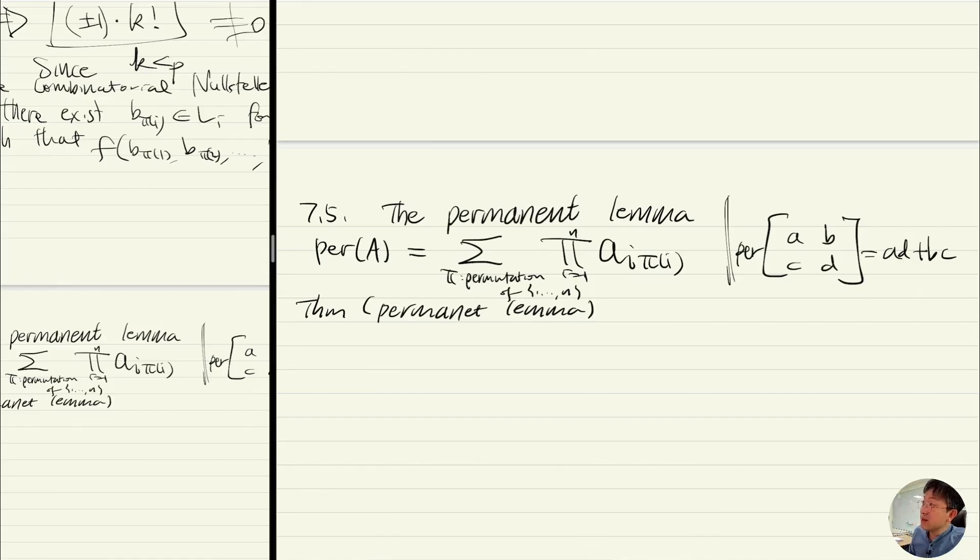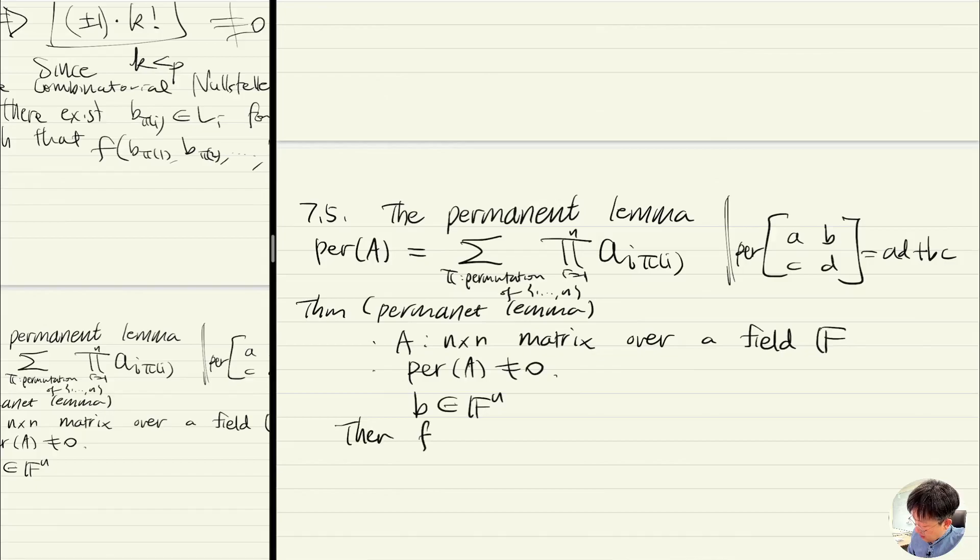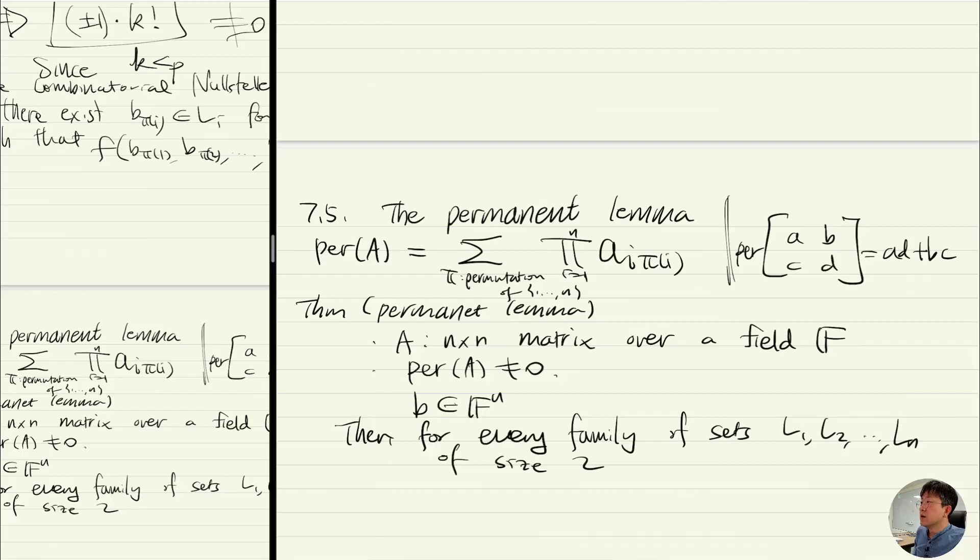The permanent lemma says the following: Here A is an n by n matrix over a field F, and let's say permanent of A is non-zero. And let's say b is a vector in the field. Then for every family of sets L1, L2, ..., Ln of size 2, so whenever you have two element subsets in F.